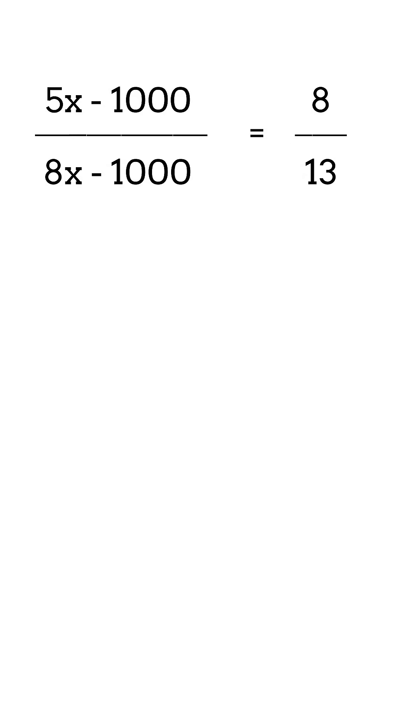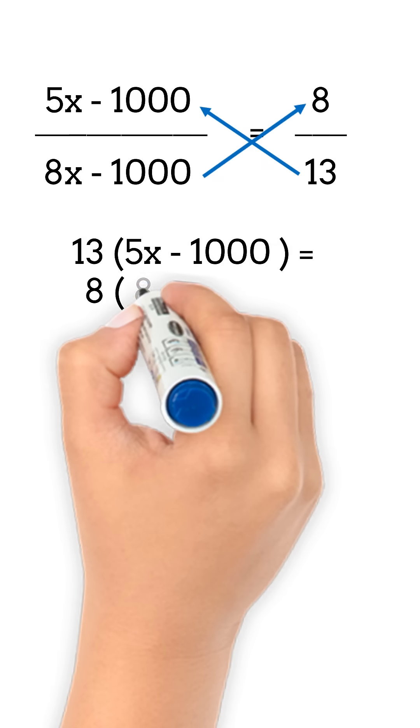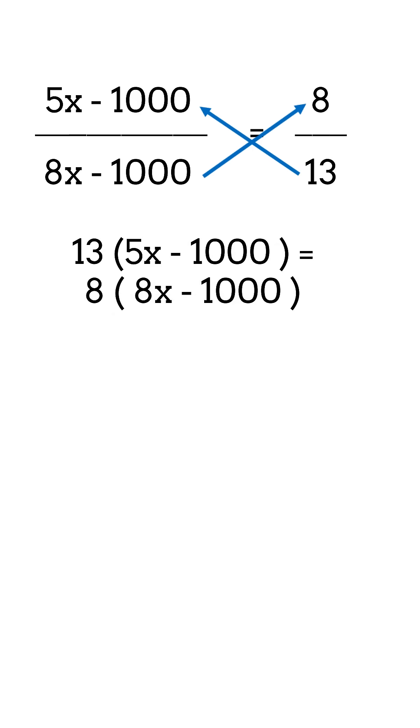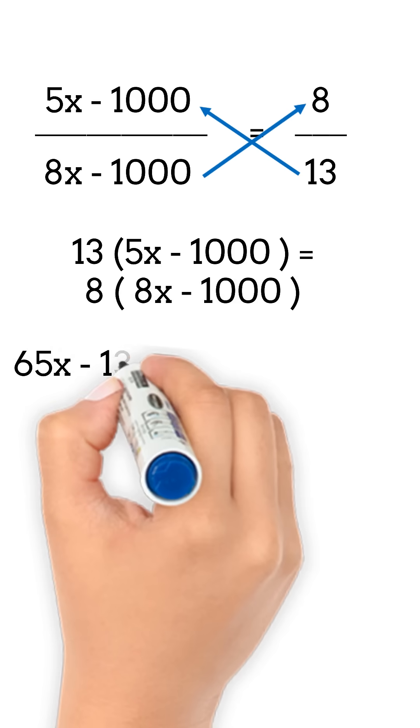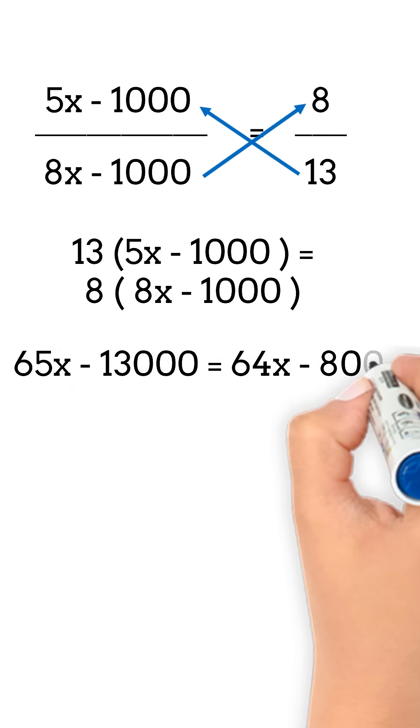By cross-multiplying, 13 multiplied by 5x minus 1,000 equals 8 multiplied by 8x minus 1,000. Let us solve to find the value of x. 65x minus 13,000 equals 64x minus 8,000.